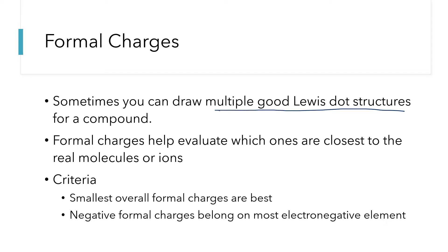Here are the two things we're going to look at. First, if we're comparing two structures and one has formal charges of zero, plus one, and minus one, while the other has formal charges of minus two and plus two, the first structure will be better because the smallest formal charges are best when comparing two structures. The second criterion is that whichever atom gets assigned a negative formal charge, it should be on the most electronegative element present in the compound.